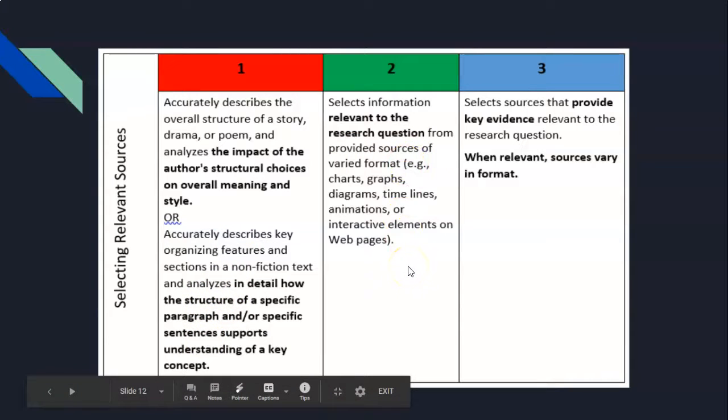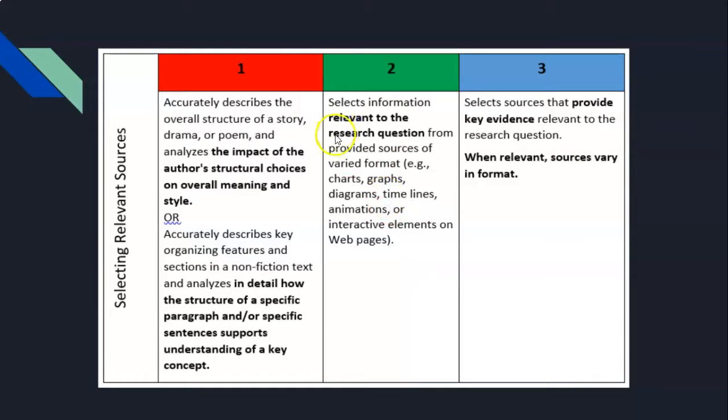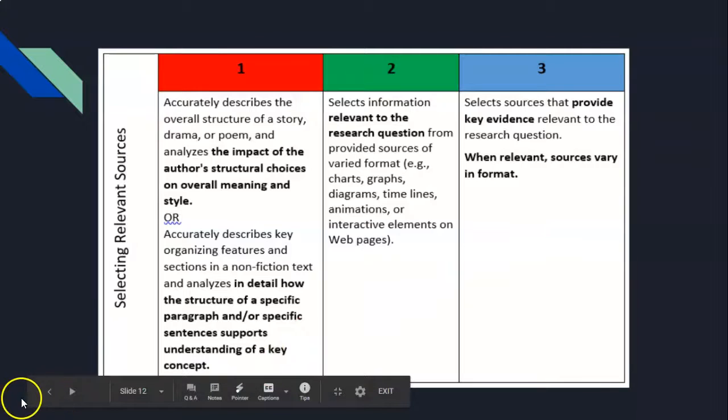For two points, you're going to select information relevant to the research question from different kinds of sources. To get all three points, you need to select sources that provide key evidence relative to the research question—really important evidence that is relevant to your question. When it's relevant, the sources are going to vary in format. We're going to want some websites, books, encyclopedias. The books and encyclopedias you can access online because you're not right now going to be able to access those from our actual library. You can do interviews—that's another really great way to get your information.